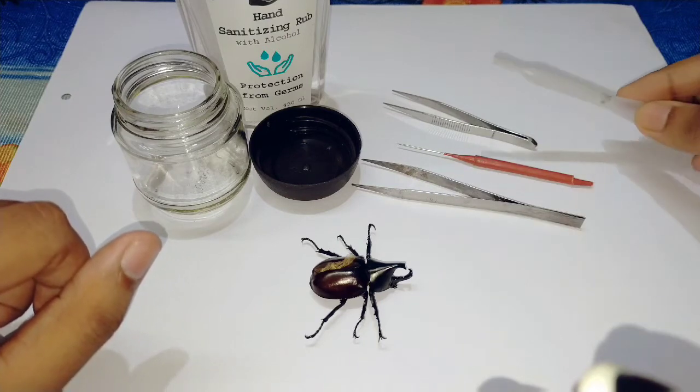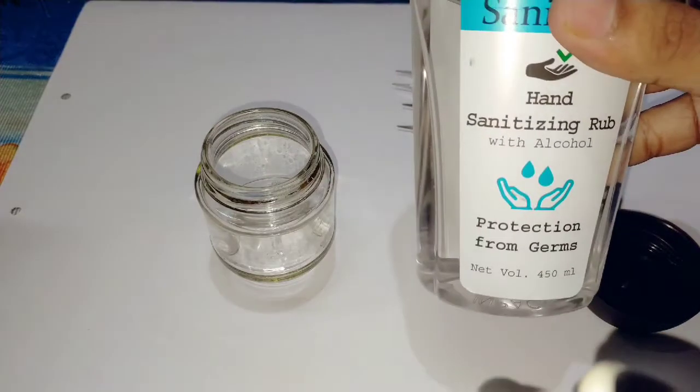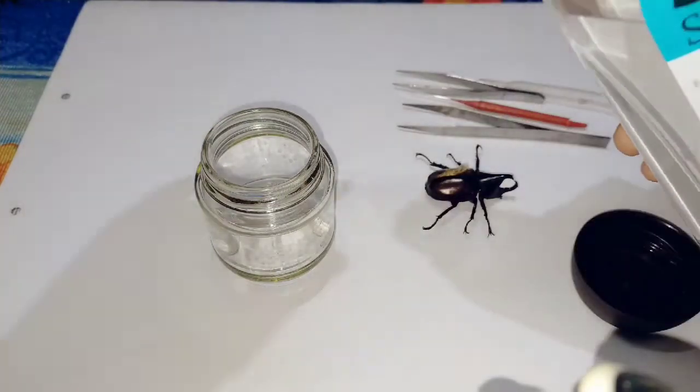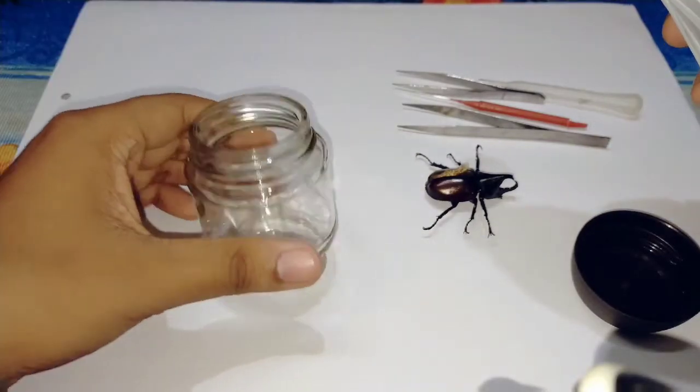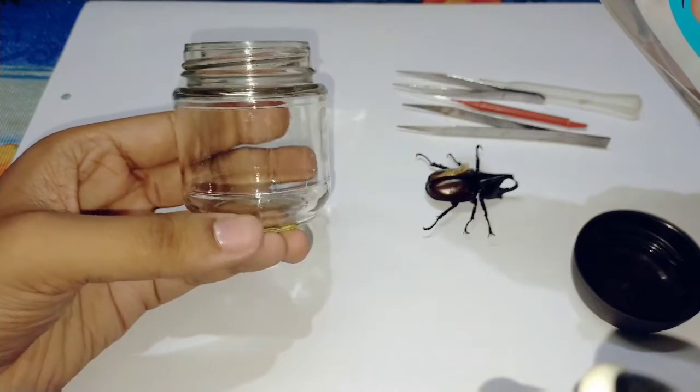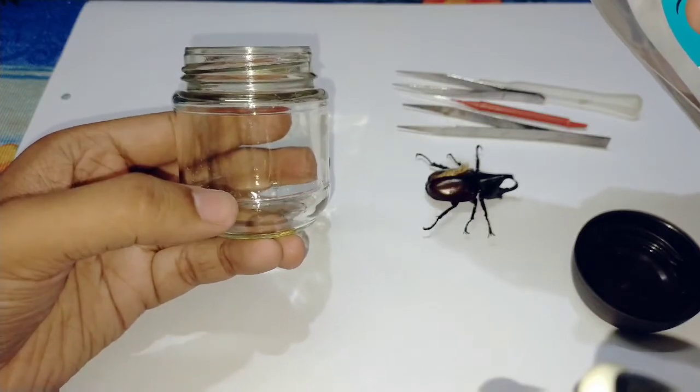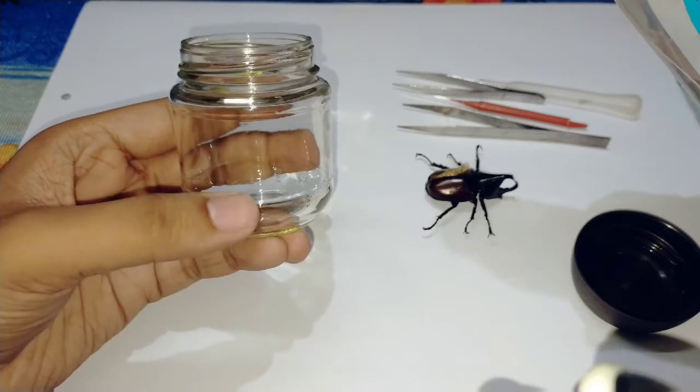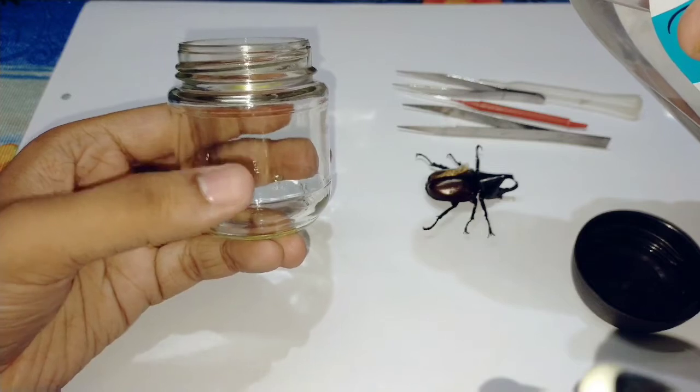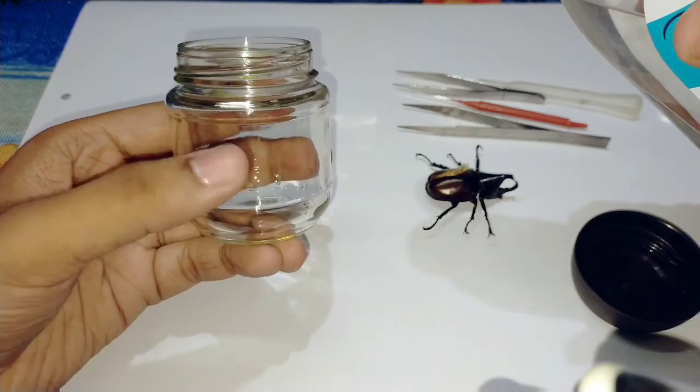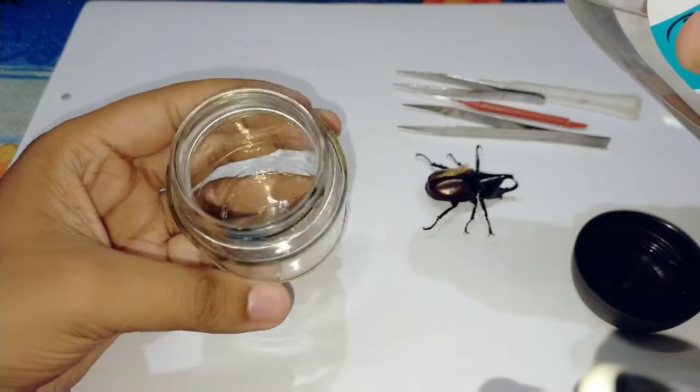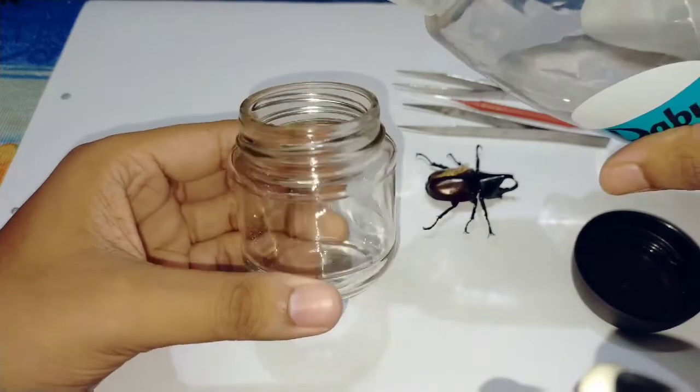First, you take the hand sanitizer, any brand or any company. You should fill the container with sanitizer up to half of it, so that it can keep the insect in the middle of the container and you can observe easily. So let's pour the sanitizer in this container.